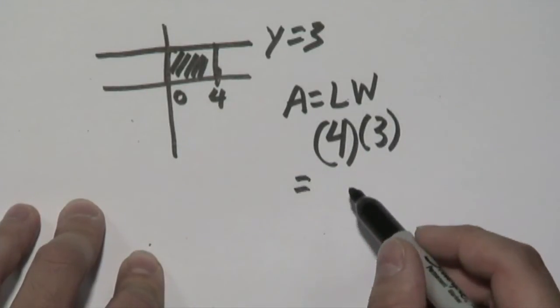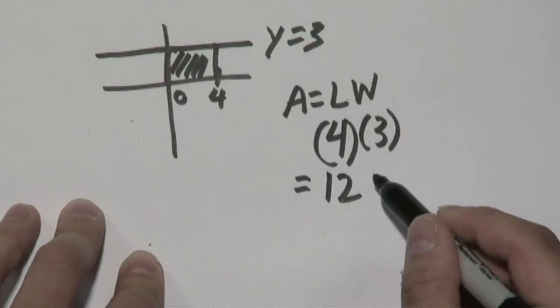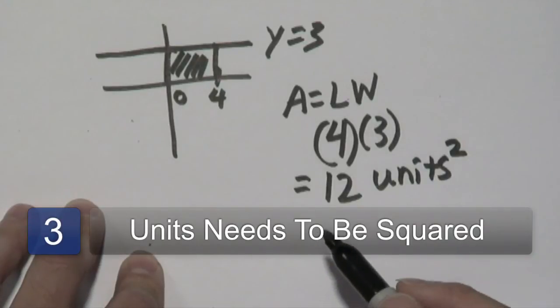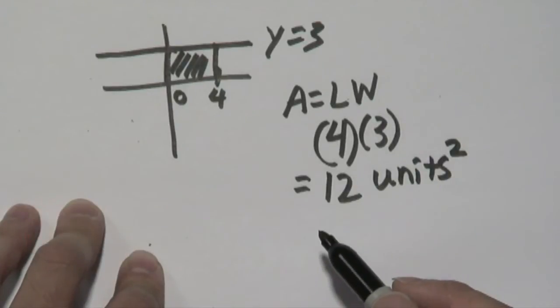So, the area under this curve is going to be 12, but since we never specified units, since area is a two-dimensional measurement, it will be 12 square units.